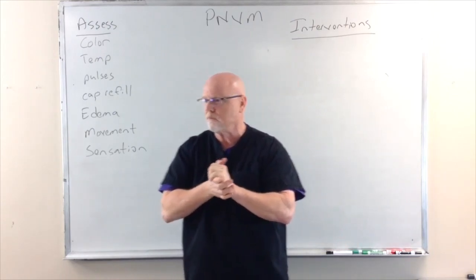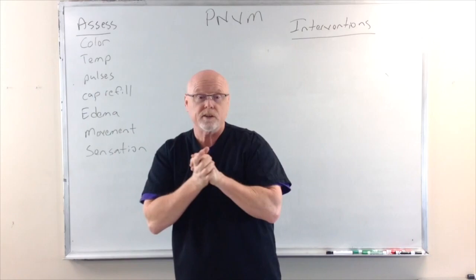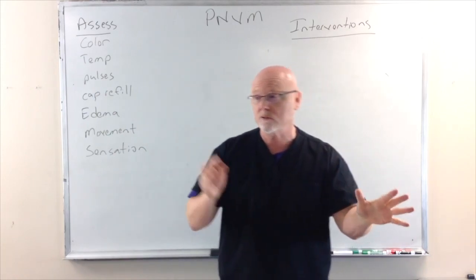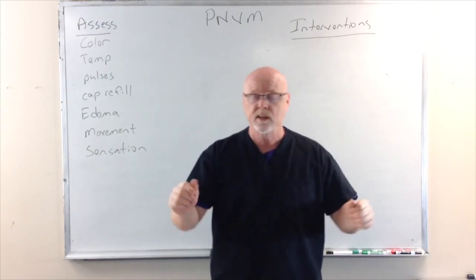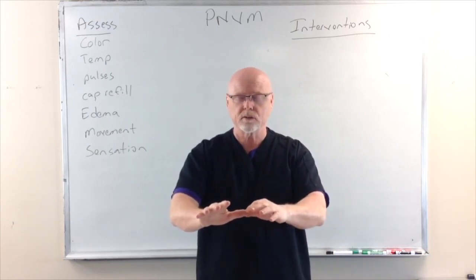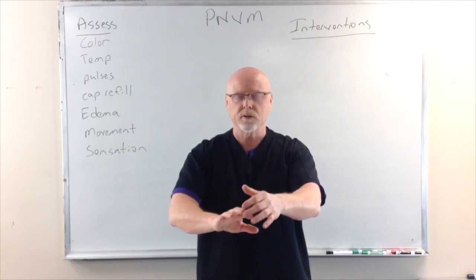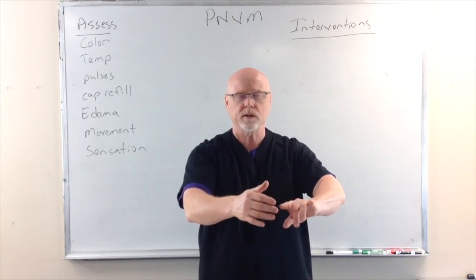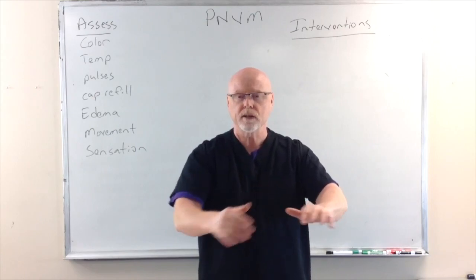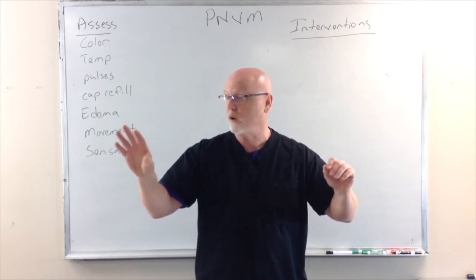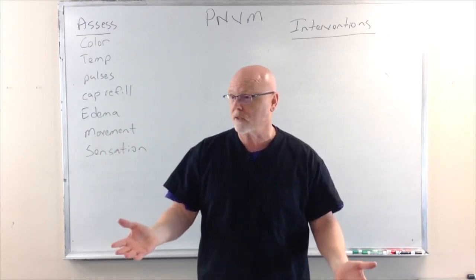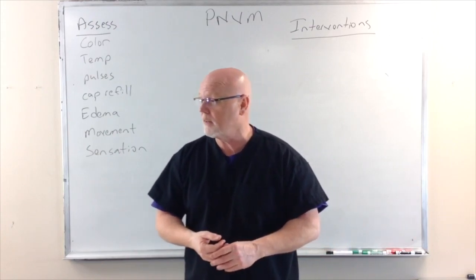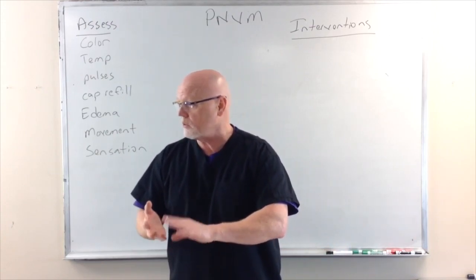Then you're going to check their sensation on two parts of each extremity. Ask the patient to close their eyes and hold their hands out, then touch them and say, 'Where am I touching you?' You touch them in two points of each extremity with their eyes closed. If they can answer correctly, sensation is intact. So we've got movement, pulses, and sensation.